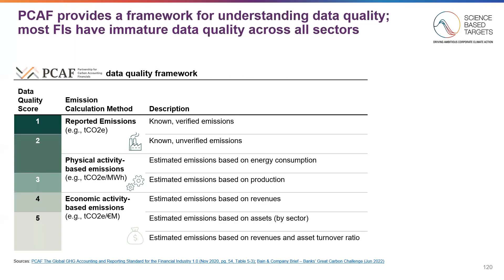The PCAF data quality framework uses the numbers one through five, with one being the highest and five being the worst. There are three types of calculated methods: reported emissions, physical activity or intensity emissions, and economic or intensity emissions. The highest quality data, with a score of one, requires verification of emissions. Data quality score two includes both known but not audited emissions and estimates based on energy consumption, since those are reliable estimates. Data quality three is similarly based in physical intensity, but based on production rather than energy consumed. Scores four and five are based on economic intensity — specifically revenues, assets, and then revenue and asset turnover if specific revenues and assets can't be tied to specific projects.